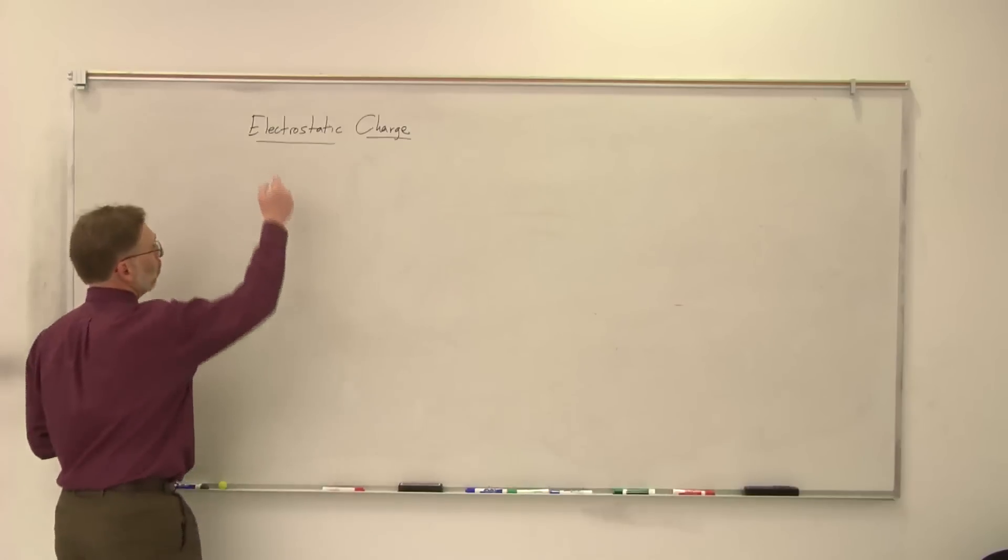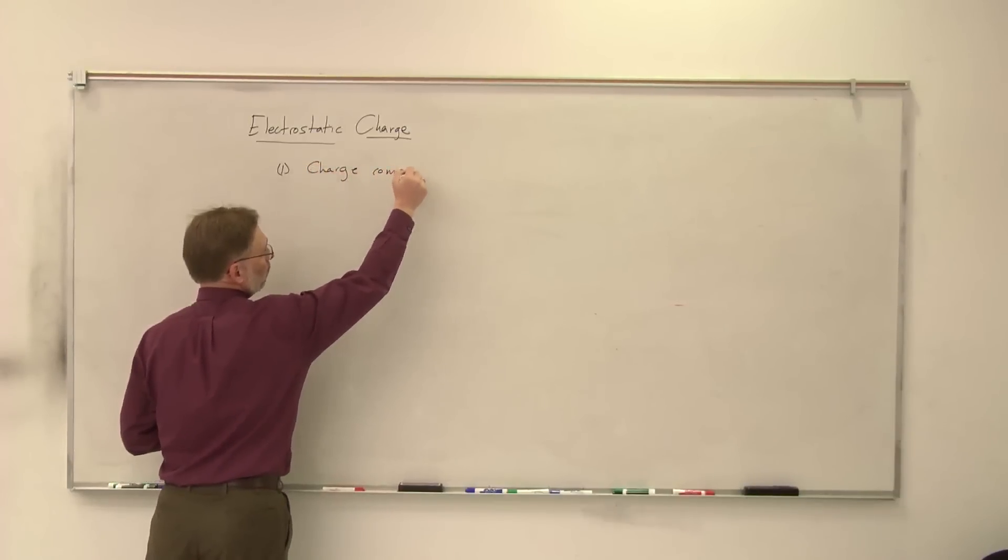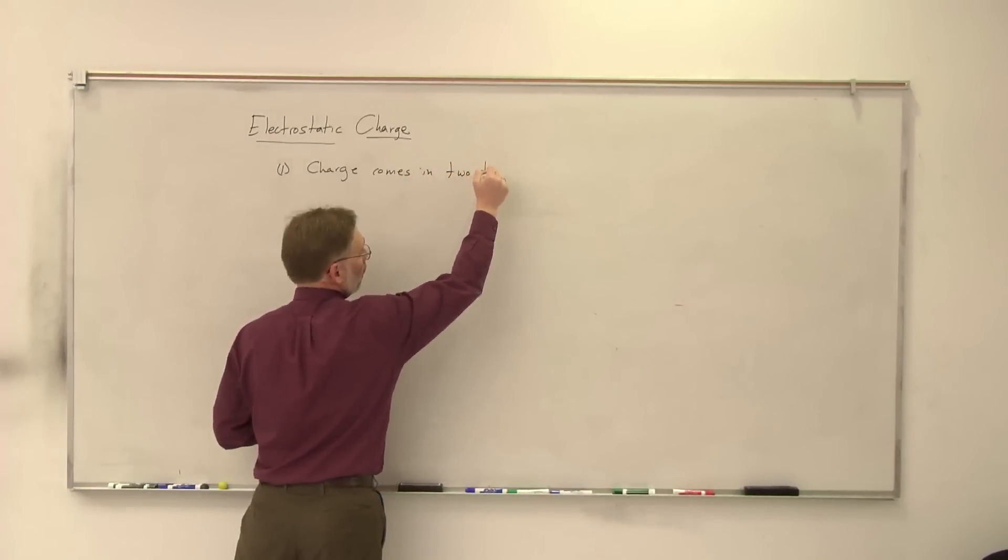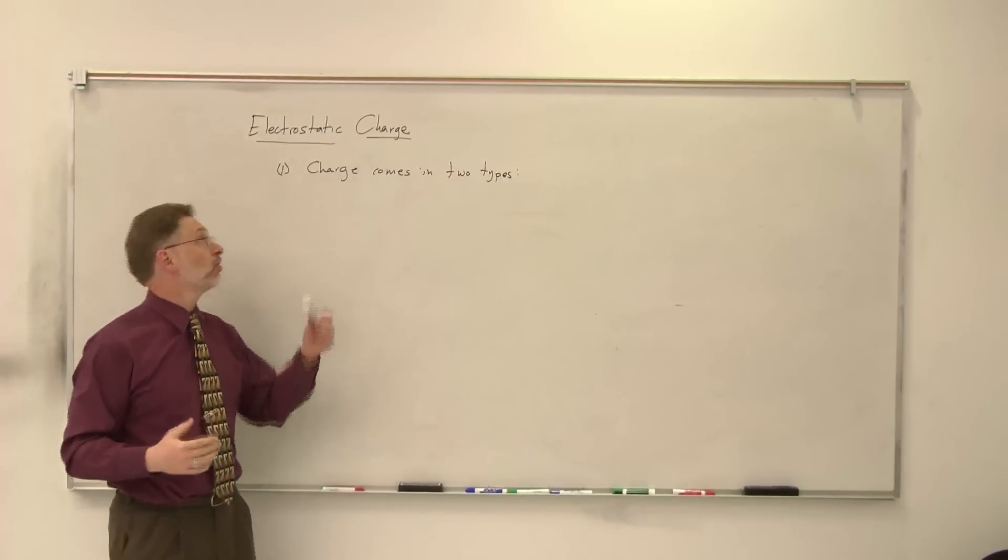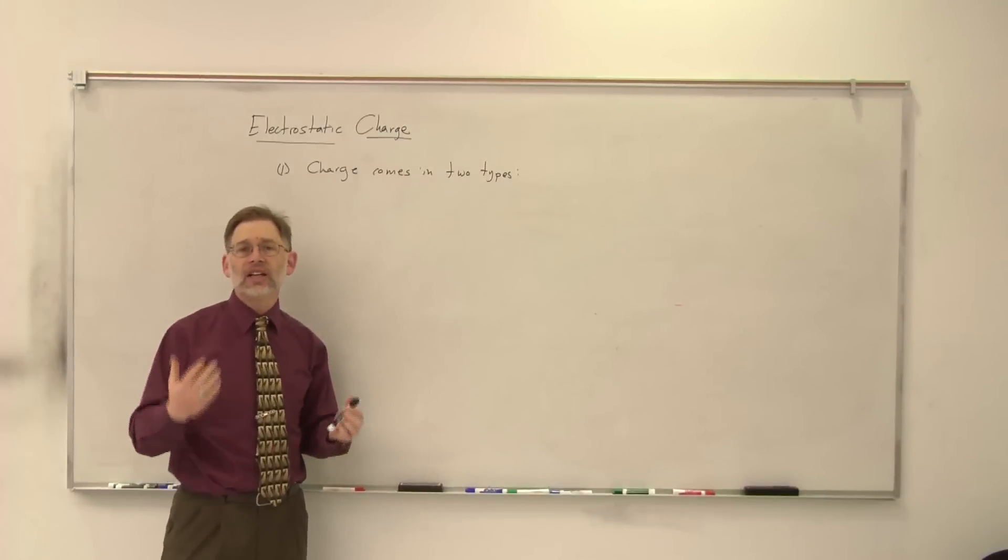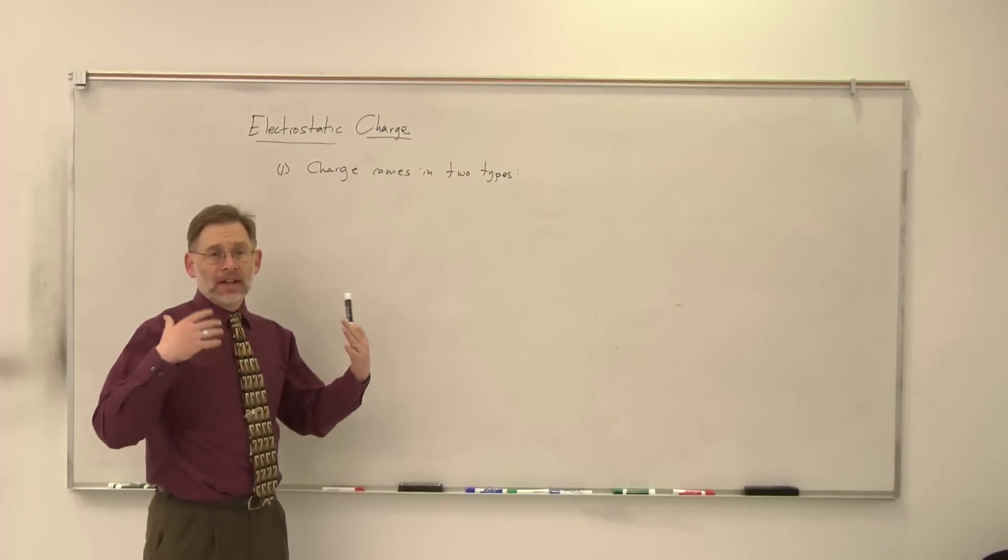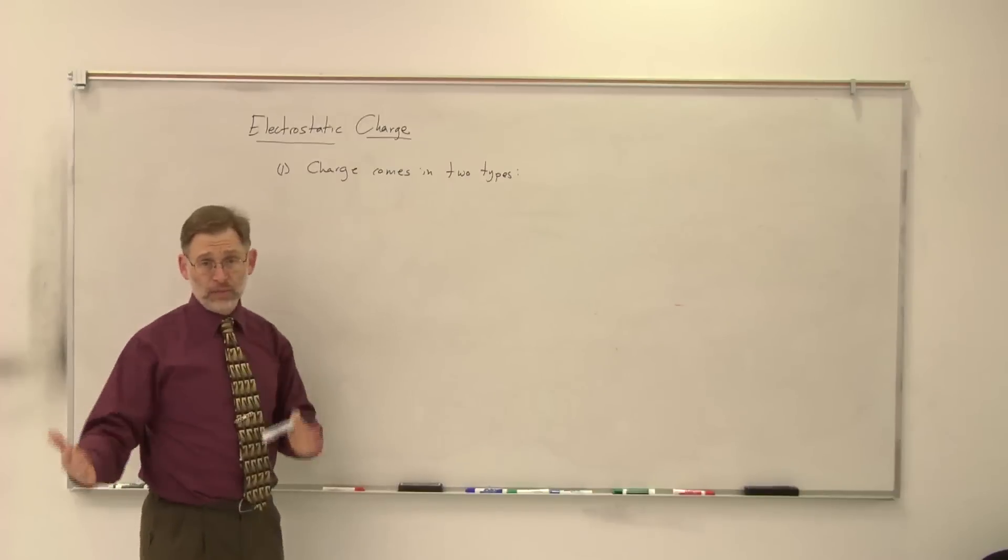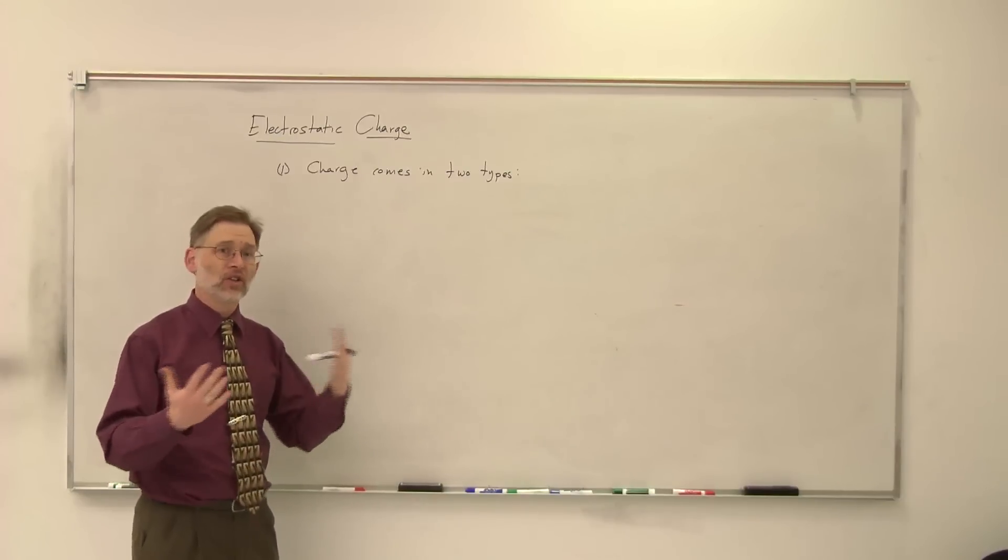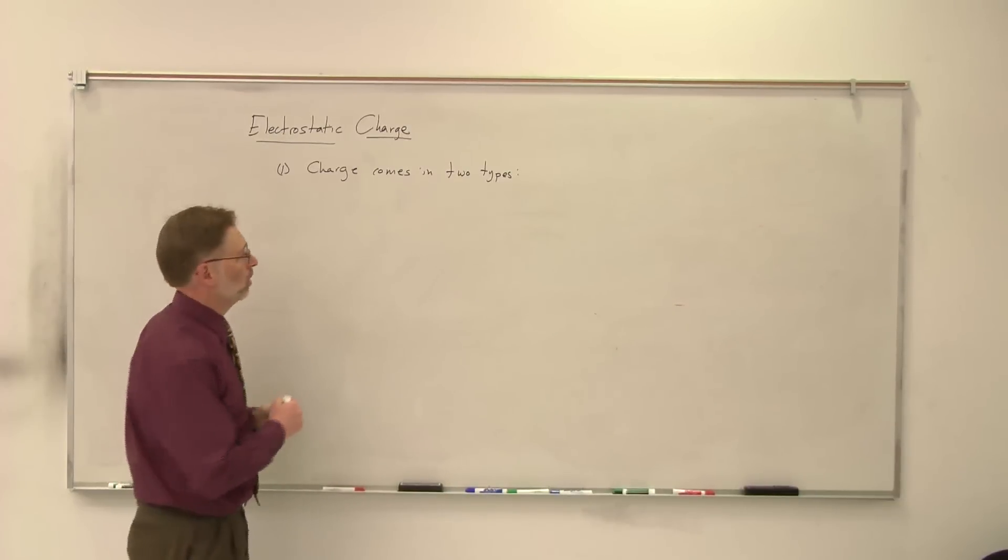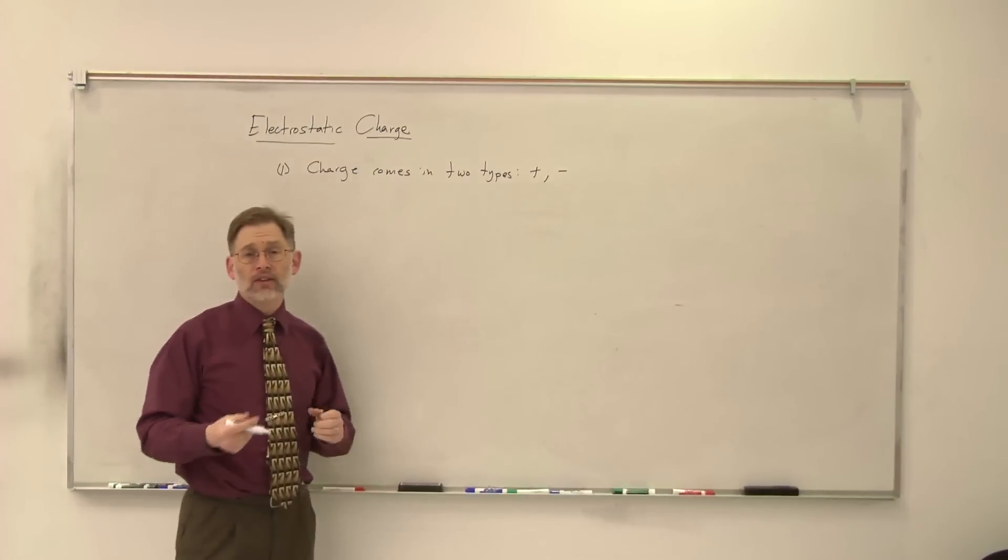So the first thing that we know about charge, number one, is Franklin was able to figure out that charge comes in two types. As Franklin does his work by rubbing various substances together to get electrostatic charge transfer to take place, he determines that charges come in two types. He has to give them names. Now, everybody from Franklin for a period of time sees the obvious parallels between magnetism and electricity, and so when they see two types, you could choose north and south, but instead what we look at is we say we have positive charges and we have negative charges.